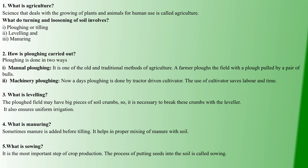The second is Machinery Plowing. Nowadays, plowing is done by means of a tractor. Some alternatives are done. This saves labor time. So you have to use this Plowing type.